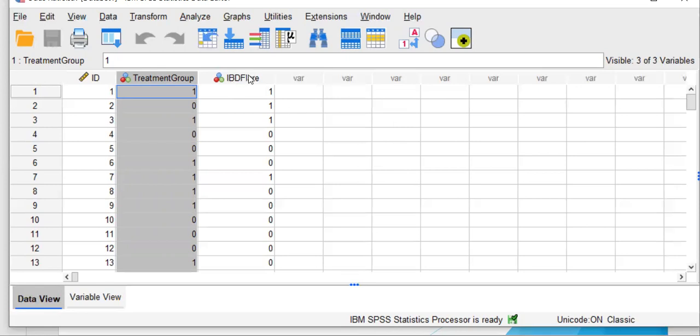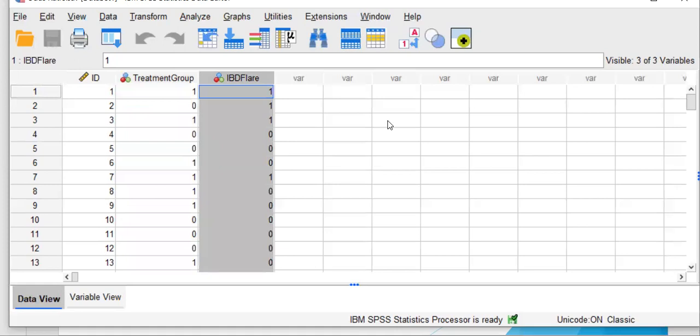So the dependent variable is IBD flare post-treatment, coded as yes or no, ones or zeros. The one is always indicative of the presence of that thing. A zero is always indicative of an absence. So as you can see, both variables in this example are binary or otherwise known as dichotomous.